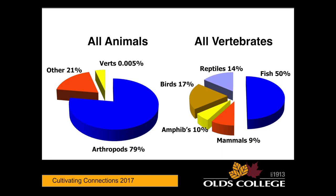If you look at it, hard and crunchy things are almost 80% of everything that we know of. Vertebrates don't even register as a percent.